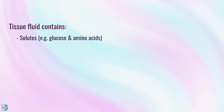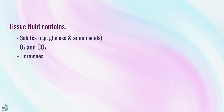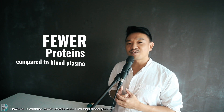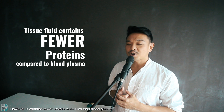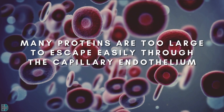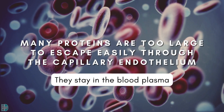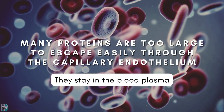Just like blood, tissue fluid contains solutes such as glucose and amino acids, gas molecules such as oxygen and carbon dioxide, and hormones and neurotransmitters. However, it contains fewer protein molecules compared to the blood plasma, because many proteins are too large to escape easily through the capillary endothelium.